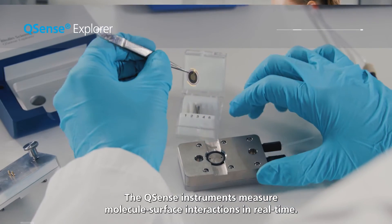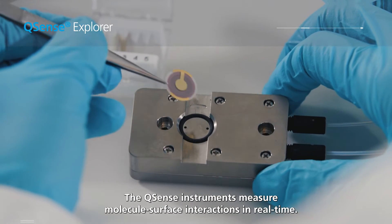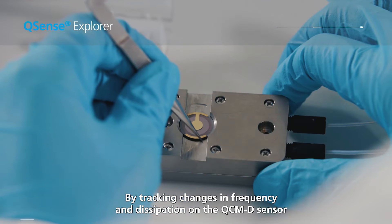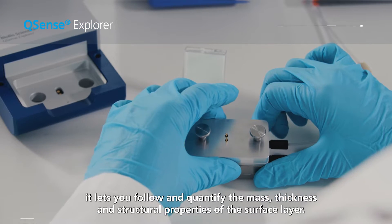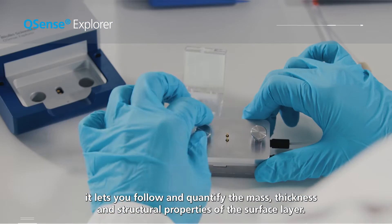The QSENS instruments measure molecule-surface interactions in real time. By tracking changes in frequency and dissipation on the QCMD sensor, it lets you follow and quantify the mass, thickness and structural properties of the surface layer.